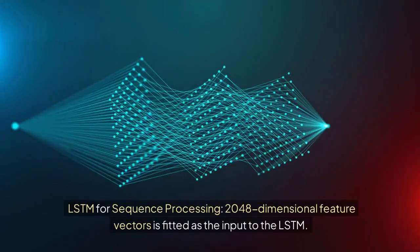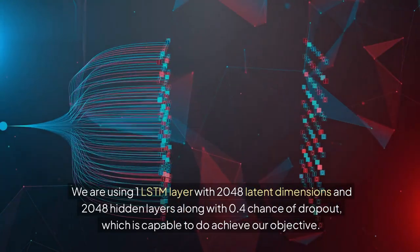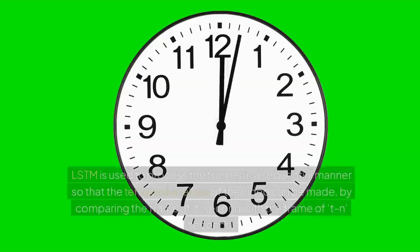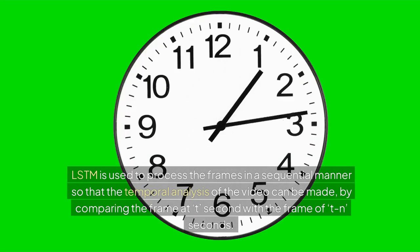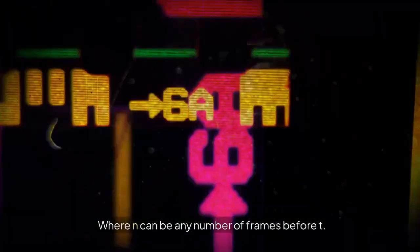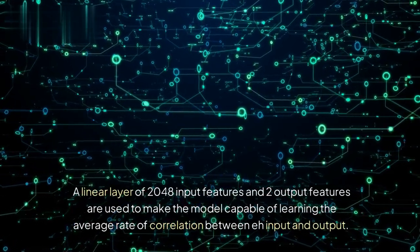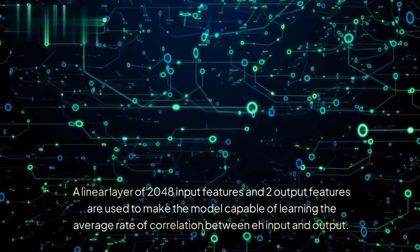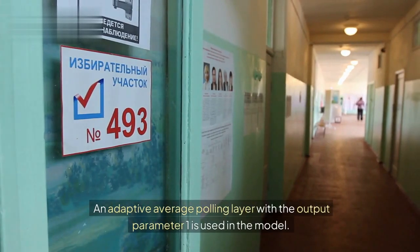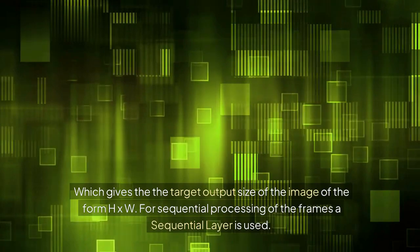The 2048-dimensional feature vectors are fitted as input to the LSTM. We use one LSTM layer with 2048 latent dimensions and 2048 hidden units along with a 0.4 dropout rate. LSTM processes the frames sequentially, enabling temporal analysis of the video by comparing the frame at time t with frames at t-n seconds, where n can be any number of frames before t. The model also includes a Leaky ReLU activation function, a linear layer of 2048 input features and 2 output features, and an adaptive average pooling layer with output parameter 1. A sequential layer is used for sequential frame processing.